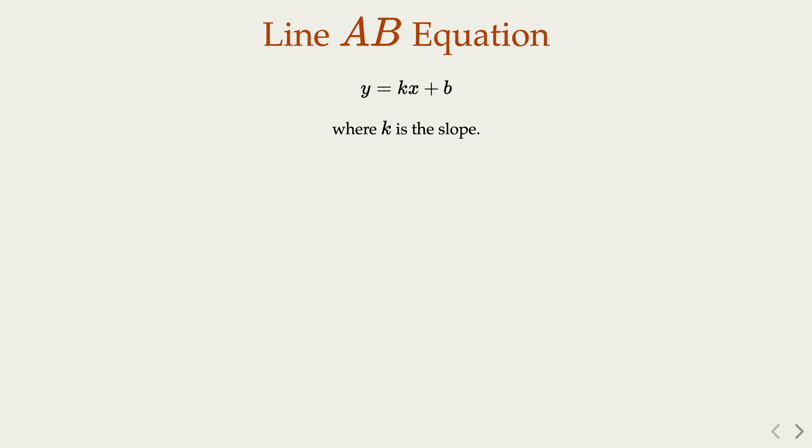Alright, let's continue. Usually line equations are y equals kx plus b, where k is the slope and b is the intercept. Here we want to prove b equals 1.